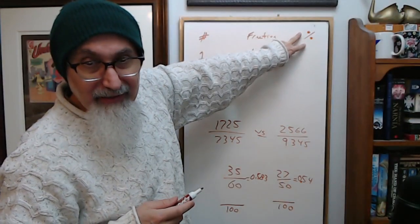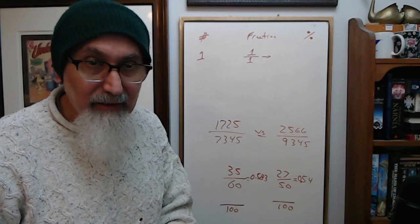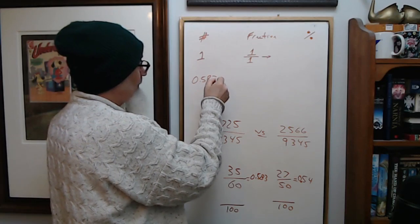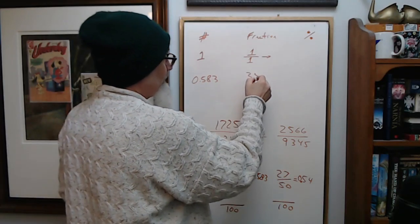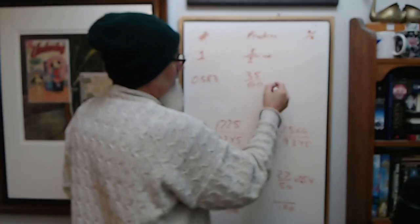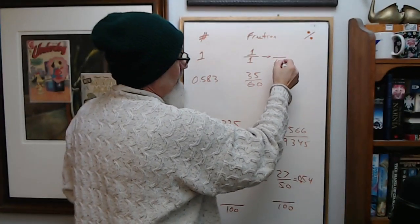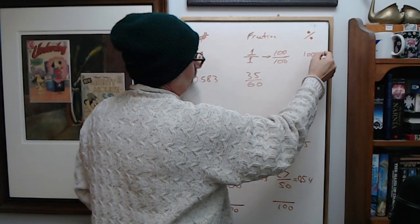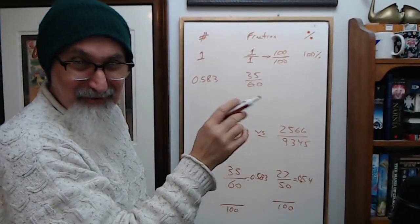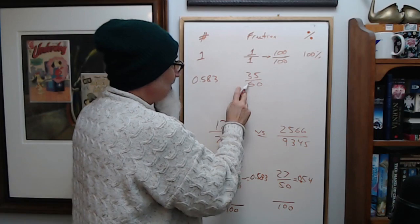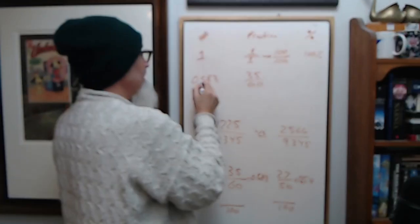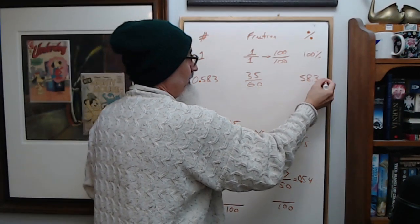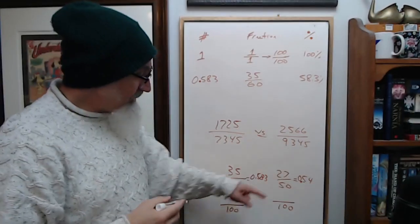Remember when I said consider the two dots as two decimal places? If you want to convert 0.583 to a percentage, which is 35 over 60, you want to take it over a hundred. This would be 100 percent. If you convert it to a percent, think of this as two decimal places. All you do is take this and move it over two decimal places, so that's 58.3 percent.